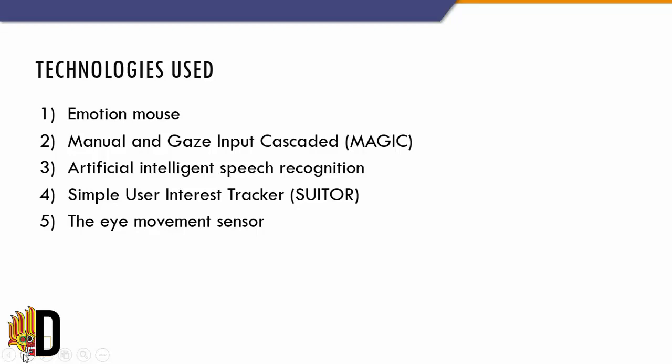The Emotion Mouse works such that by a single simple touch on the mouse or keyboard, the machine starts to react with the user according to their emotional level. This Emotion Mouse will identify the user's emotions such as fear, surprise, or any other emotion.